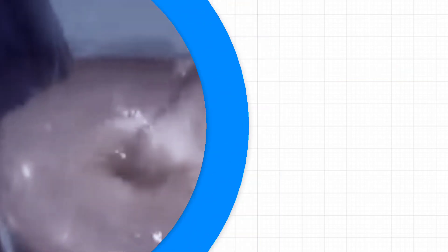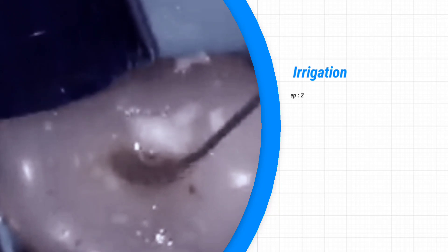Then we fill the canal with the final rinse solution. We are using sodium hypochloride as an irrigant.